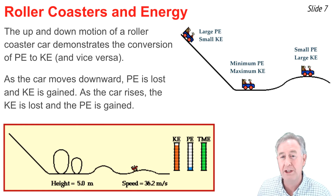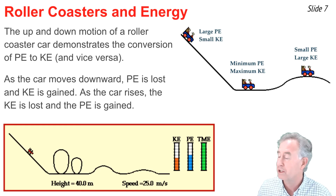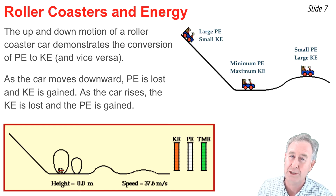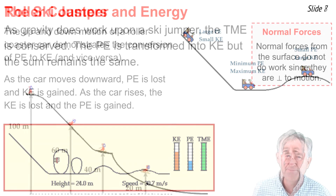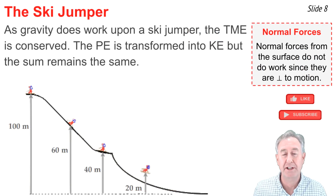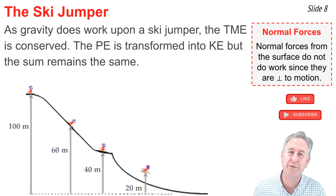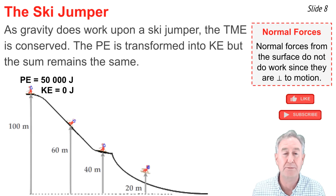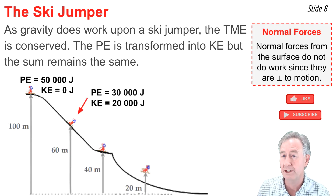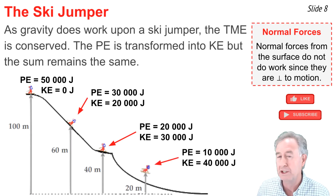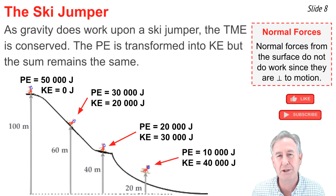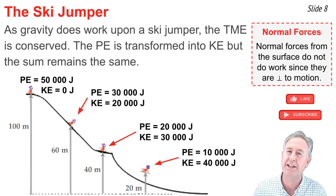As we notice in the animation, speeds are always greatest at the lowest location where kinetic energy is greatest, and speeds are always smallest at the highest location where potential energy is greatest and kinetic energy is smallest. As a final example, let's consider a ski jumper. The normal force on the ski jumper is perpendicular to the surface and thus cannot do work. Mechanical energy is conserved since the only force doing work is the conservative force of gravity. As the ski jumper moves downwards, potential energy decreases and kinetic energy increases. When it finally reaches its lowest position where potential energy is zero, kinetic energy is at its maximum and the jumper is traveling fastest.